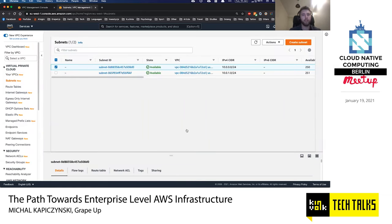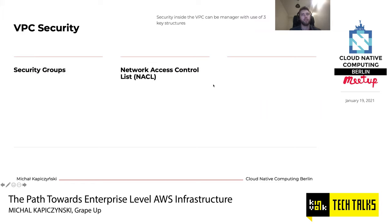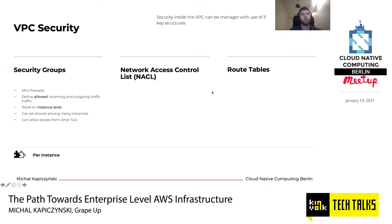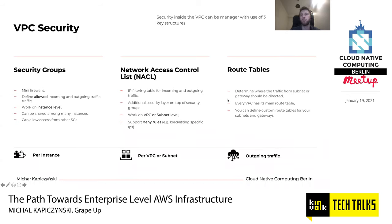Security inside the VPC can be managed using three key structures: security groups, network access control lists (NACLs), and route tables. Security groups work like mini firewalls — they define allowed incoming and outgoing traffic, work at the instance level, and can be shared among many instances. NACLs are IP filtering tables for incoming and outgoing traffic, working as an additional security layer at the VPC or subnet level. They also support deny rules, useful for blacklisting specific IPs. Route tables determine where traffic from subnets or gateways should be directed, and each VPC has a main route table with custom tables possible for subnets.